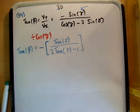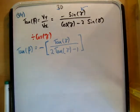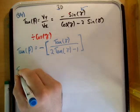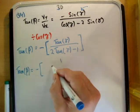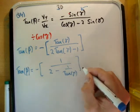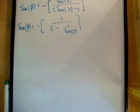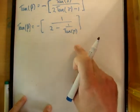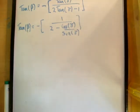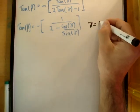The next thing is to divide across by tan gamma — there's no particular reason, I just find it easier to manipulate in that form. So we have tan beta equals negative 1 over 2 minus 1 over tan gamma. Now 1 over tan gamma is cosine gamma over sine gamma. The next thing I'm going to do is change gamma, because we know gamma equals alpha minus 45. So tan beta equals negative 1 over 2 minus cosine of alpha minus 45 over sine of alpha minus 45.